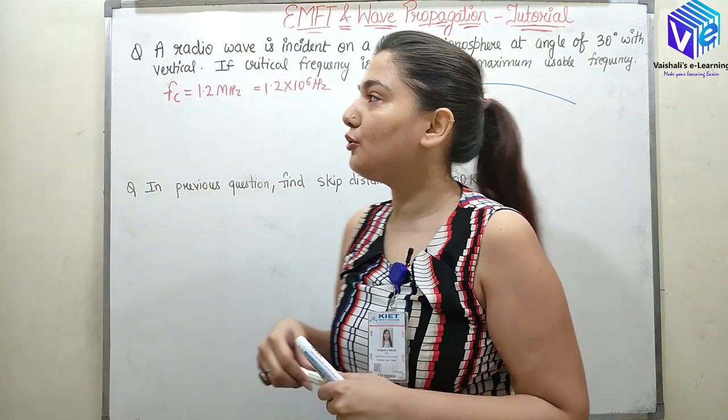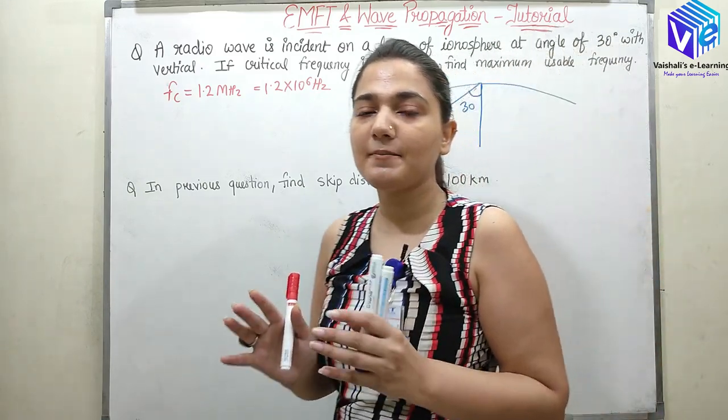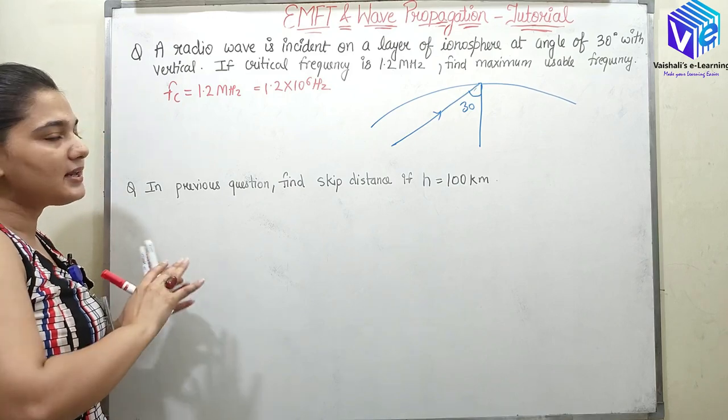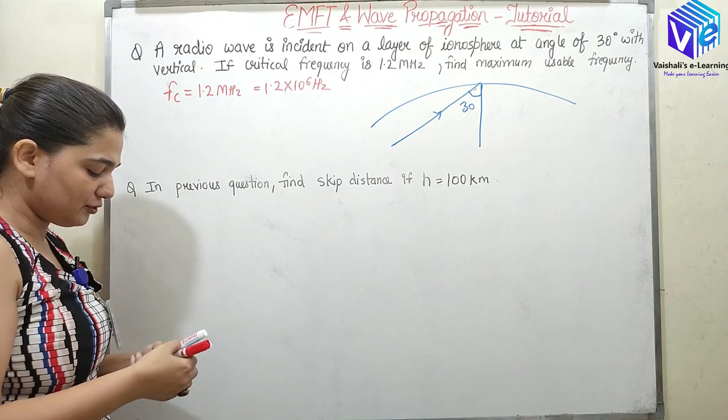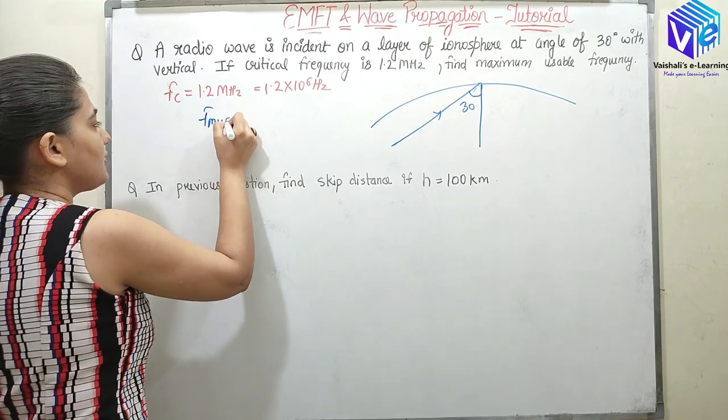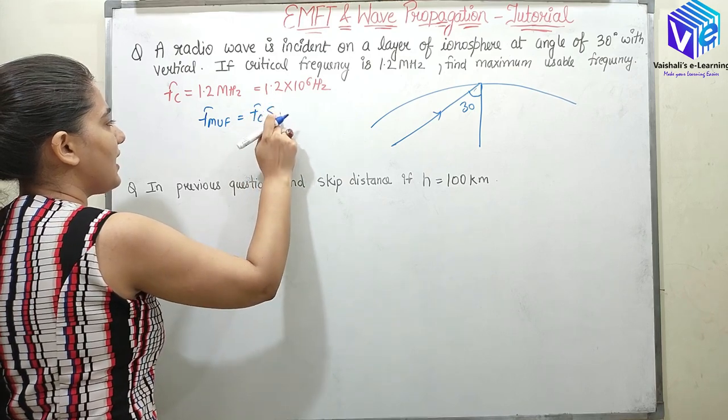Now we know theta, we know critical frequency. I hope you remember what is critical frequency and maximum usable frequency. We can relate both of them. I hope you remember the relationship. So Fmuf was given as Fc sec(I).